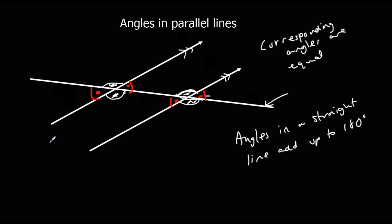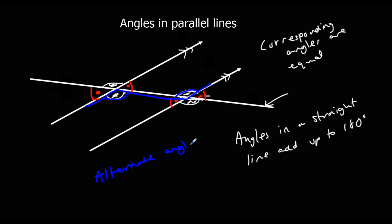Another type of angles are called alternate angles. You need to be able to identify alternate angles — they are any angles that make a Z shape. So this angle and this angle are alternate angles, and alternate angles are equal.